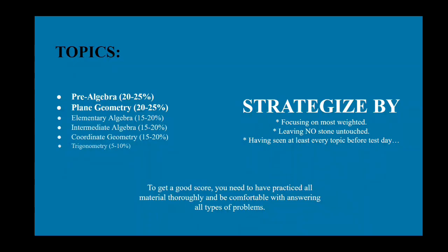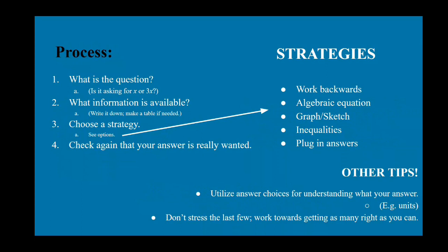Based on this, you want to strategize by focusing on the most weighted topics. If you're not proficient in plane geometry, focus on that over going back and learning trigonometry, which is only five to ten percent. That said, you want to have seen every topic before the actual exam date — not necessarily proficient, but knowing what trig problems look like so you can identify and skip them if needed. To get a 30 plus, you need to have practiced all the material thoroughly.